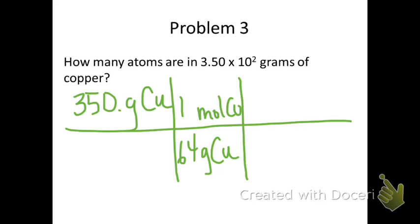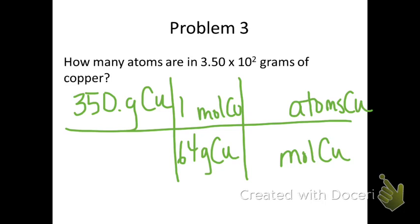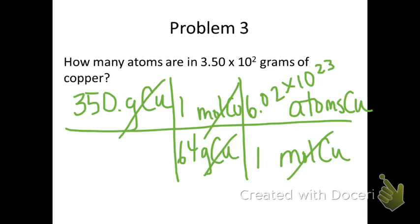You will notice that atoms are not yet present. This means the t-chart needs to expand out one more step. You are forced to put mole in the bottom right of the next section, and then you are able to put atoms on top. Pause the video and put the correct numbers with the correct units. Cross out any units you can, then multiply the top numbers and divide by the bottom numbers. You should get 3.3 times 10 to the 24th atoms of copper.